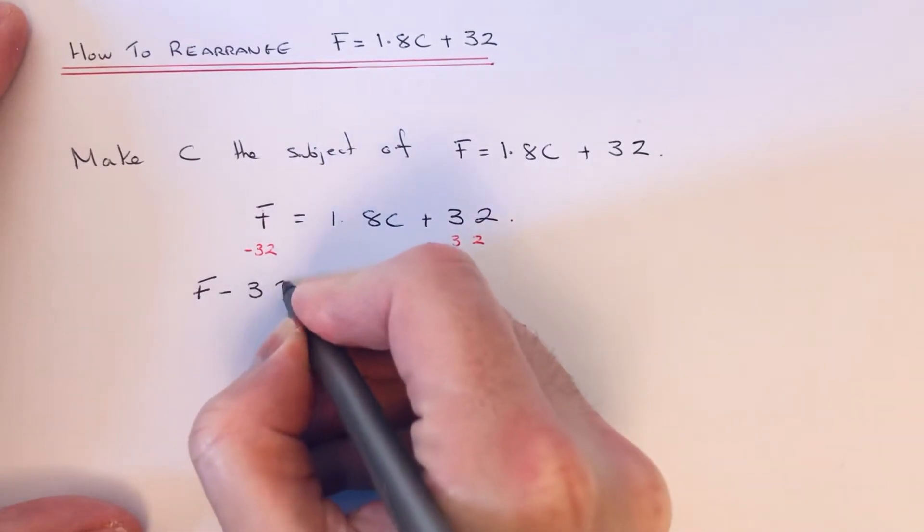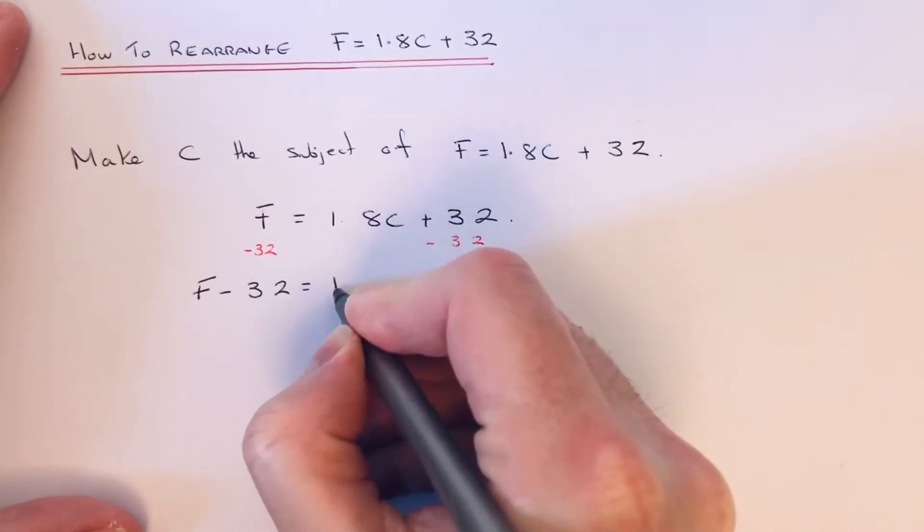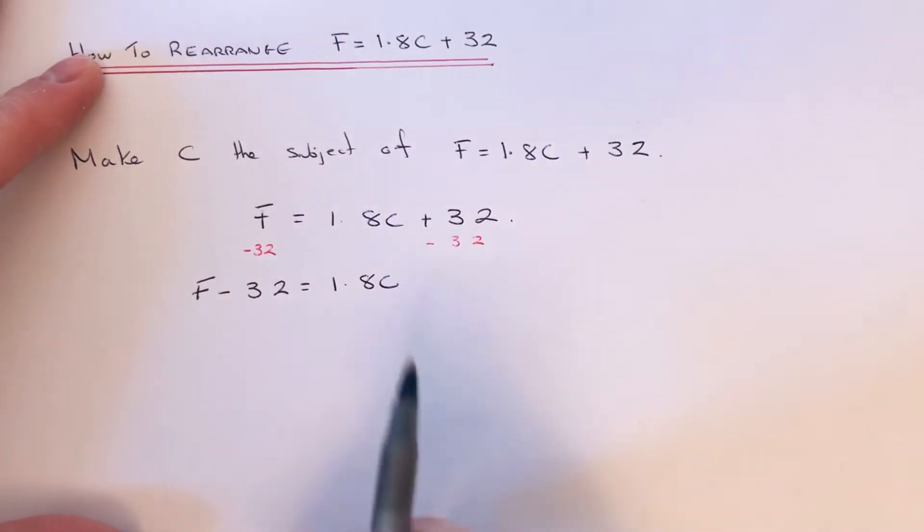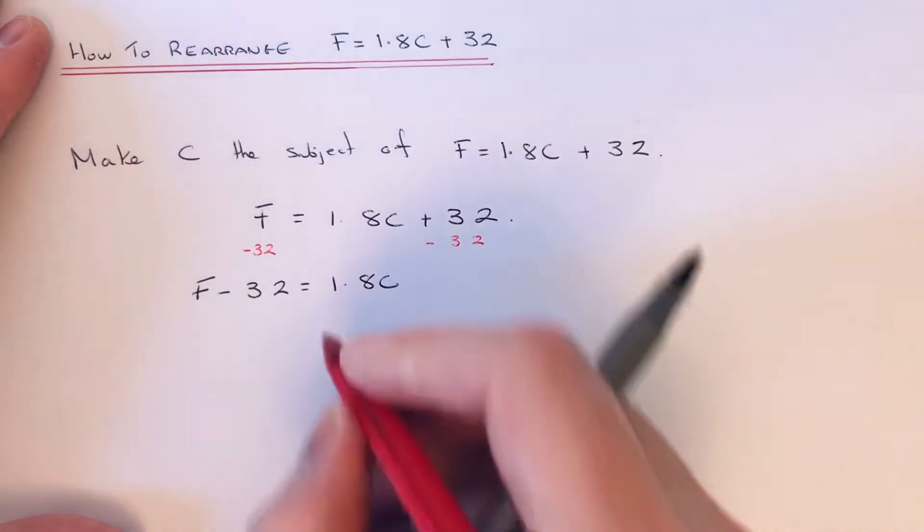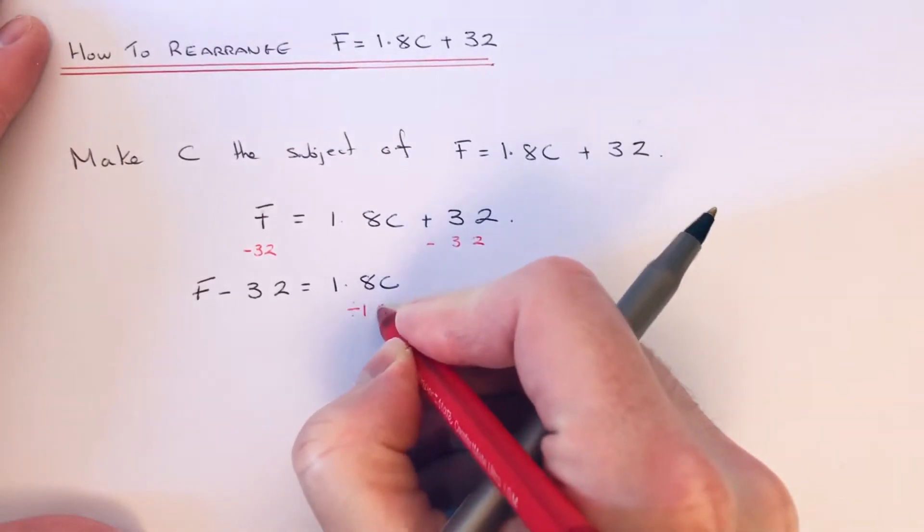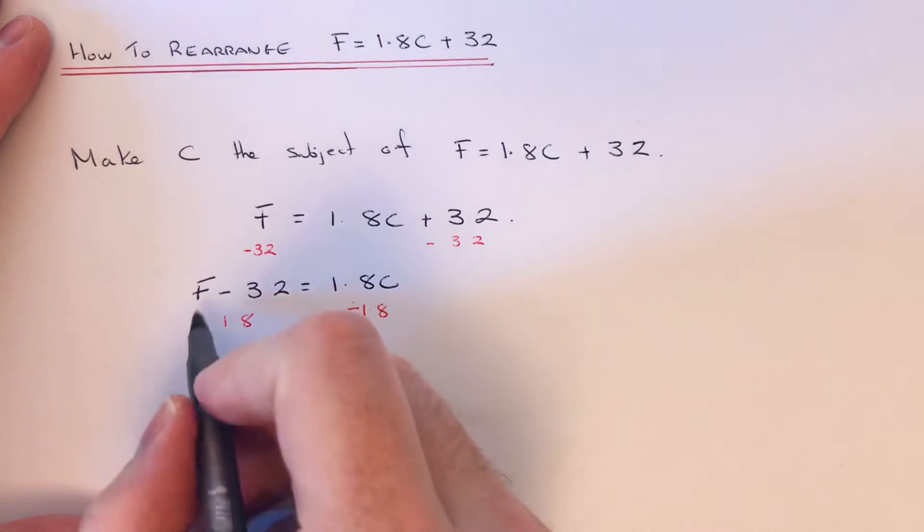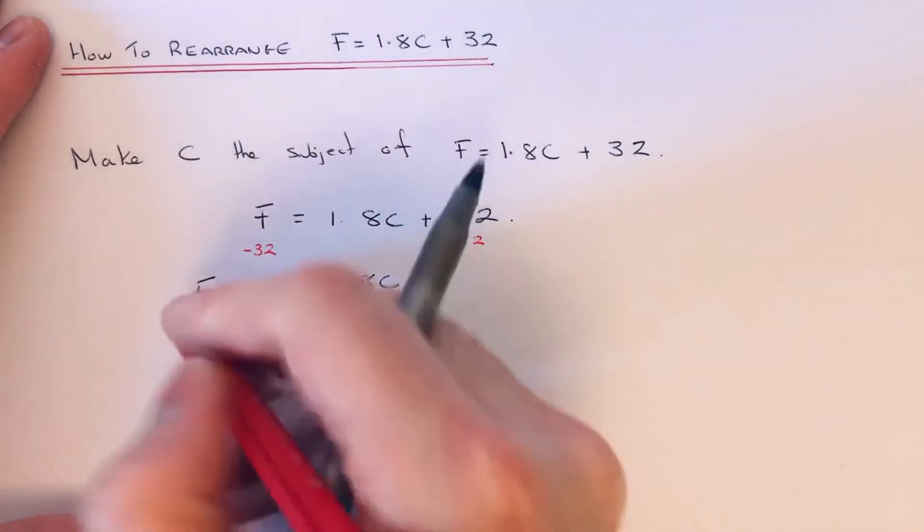And copy down the 1.8C to the next line. So C is now being multiplied by 1.8, so the inverse is to divide by 1.8 on both sides.